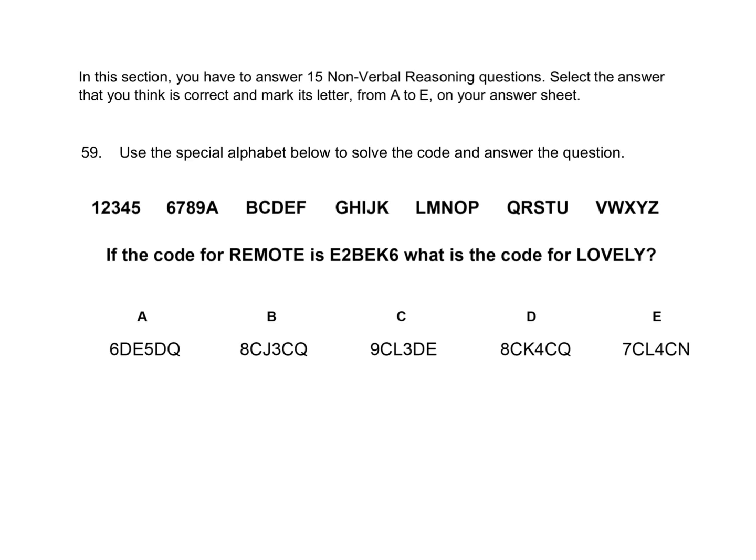We take this a letter at a time, beginning with the letter R. Its code letter is E. Here is the letter R and here is the letter E. To get from R to E, I would need to jump backwards 5, 10, 11, 12, 13 places.